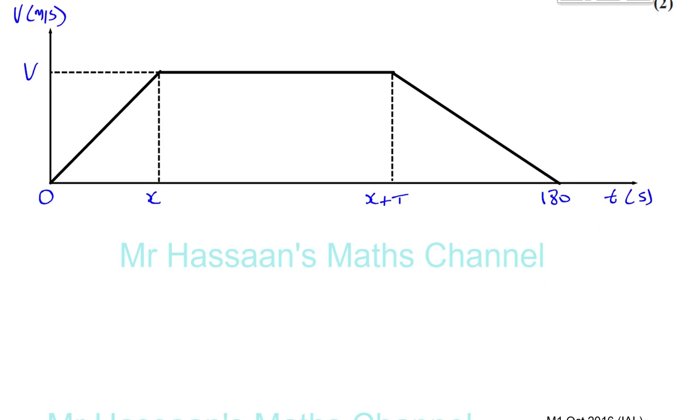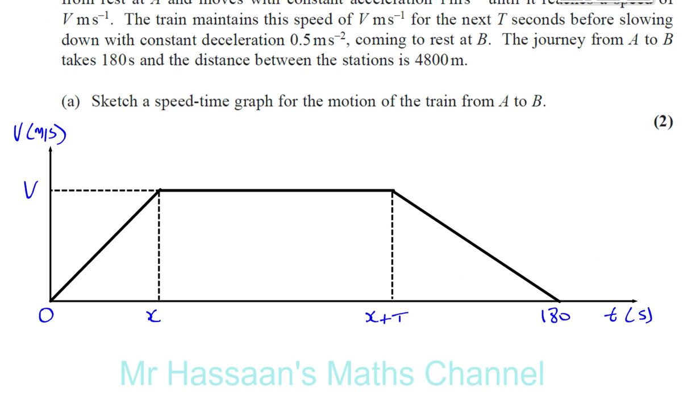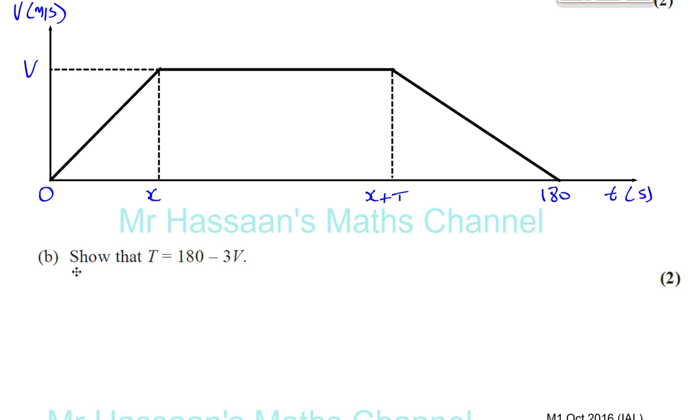That's part A done. Now part B says show that T equals 180 minus 3V. So that means we want to have the time in terms of V. And we just mentioned here that this must be V. And I'll show you why. Because the gradient of this is V. We could say that V equals U plus AT. And we could say that the final velocity is V, the initial velocity is 0, A is 1. So you'll have V equals 0 plus 1 times T. So T is equal to V.